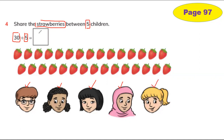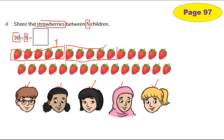How many strawberries? 30. And how many children? Five. So now you need to make a group of five. Let's find out: one, two, three, four, five — this is group number one. Now let's make the other group: one, two, three, four, five. Now I'm going to make group number two.